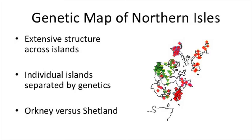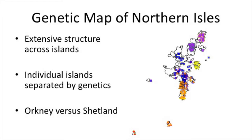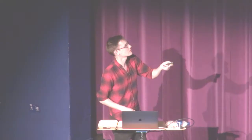Within the Northern Isles, there's extensive structure at an island-by-island level. It's extraordinary. For example, our four samples from North Ronaldsay are completely separated away from other islands — even with just four samples you can differentiate them. All the different islands separate away from each other. Within Shetland, a similar story: Fair Isle clusters better with Shetland than with Orkney, and there's also structure within the Shetland mainland and individual islands.